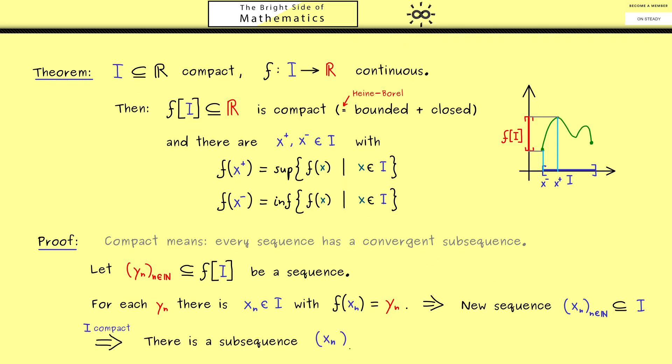More concretely the definition of compactness now tells us that this sequence has a convergent subsequence. Now you are already used to subsequences where we need a second index and we usually call it k. Here we know for this subsequence it makes sense to send k to infinity. Because what comes out here is an element of I. Let's give the point a name, let's simply call it x.